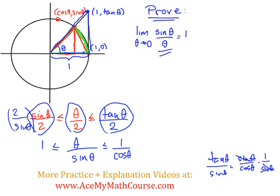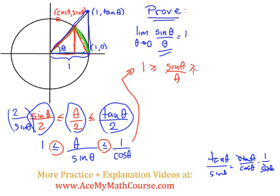Now I just want to take the reciprocal of everything so that I can finally get sin(θ)/θ. When I take the reciprocal of everything, I'll have to switch the inequalities. So I'll have: cos(θ) ≤ sin(θ)/θ ≤ 1.